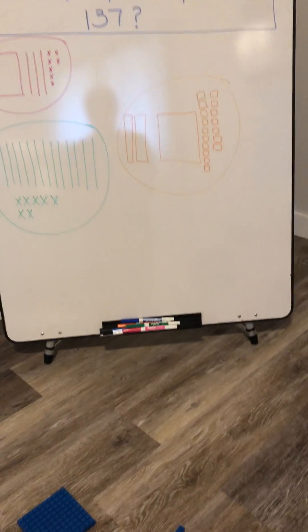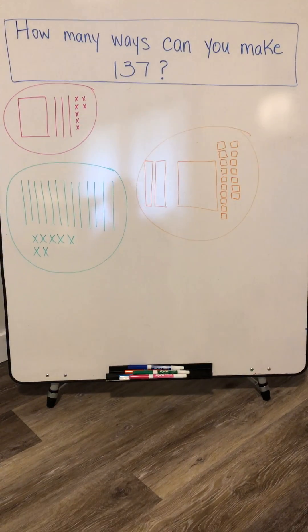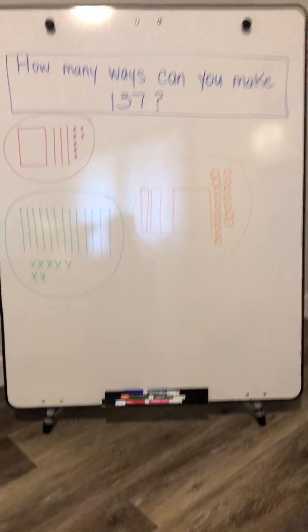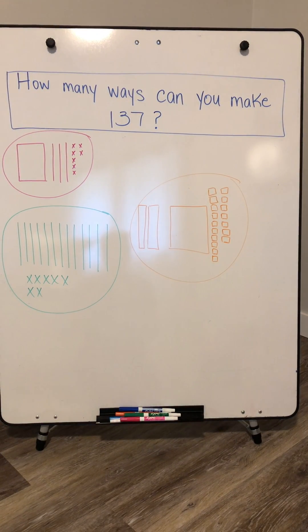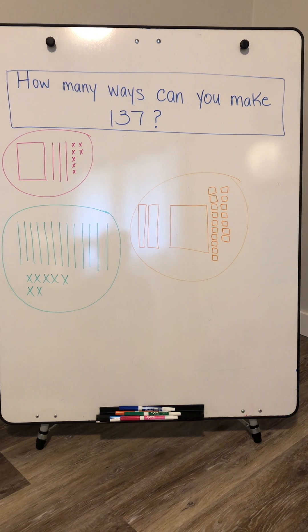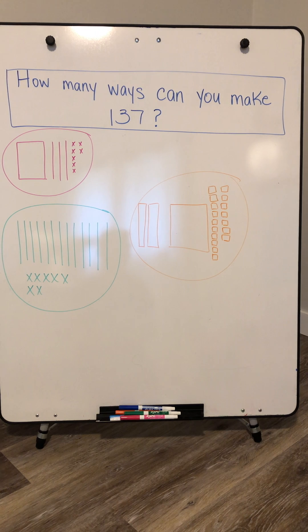The third way is to do 'how many ways,' and we can do this as a carousel activity, which I love. For a carousel, you would write about ten different questions on pieces of chart paper or on the whiteboard in various places around the room, and students will circulate, moving from question to question, trying to answer each one in a way that nobody has answered it yet.